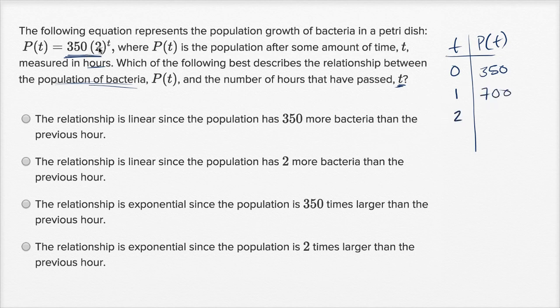When t is two, what's the population? Well, 2 to the second power is four. Four times 350 is 1200 plus 200, which is 1400. So what you see, what's happening after every hour, the population is doubling.